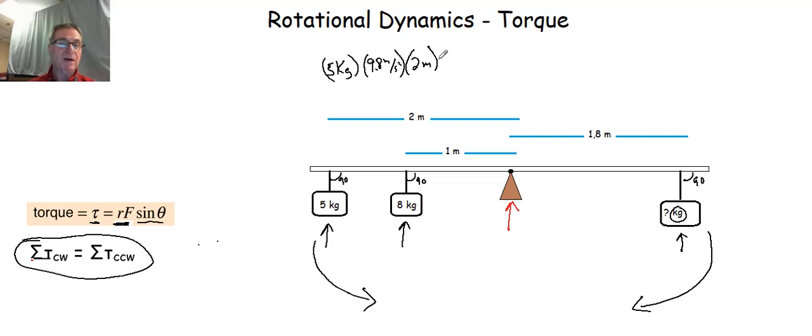plus 8 kilograms times 9.8 meters per second squared times 1 meter because that's the distance it is from the pivot point or the center of rotation. Those are our counterclockwise torques. We have two of them.